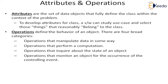Similarly, operations are included in the class description and define the behavior of the object. We know that classes are instantiated by taking the object, and objects are generalized to form classes, so many times we use the terms class and object interchangeably. Operations define the behavior of an object. There are four broad categories of operations: operations that manipulate data, operations that perform a computation, operations that inquire about the state of an object, and operations that monitor an object for the occurrence of a controlling event.